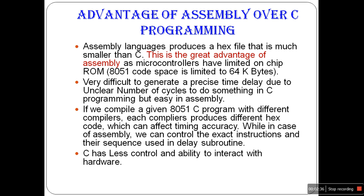It is very difficult to generate a precise time delay in C programming due to the unclear number of cycles, but easy in assembly. If we compile a given 8051 C program with different compilers, each compiler produces different hex code, which can affect timing accuracy. In assembly, we can control the exact instructions and their sequence. Since C is a medium-level language, it has less control and ability to interact with hardware.